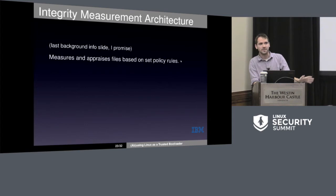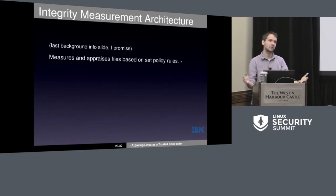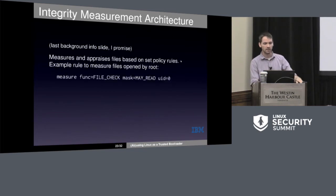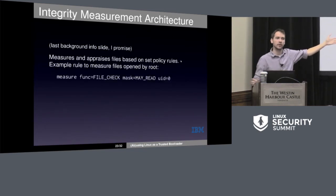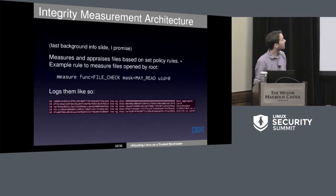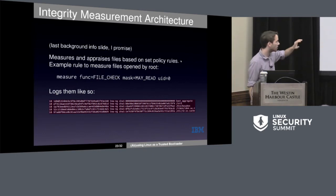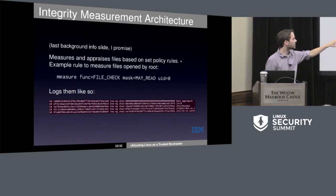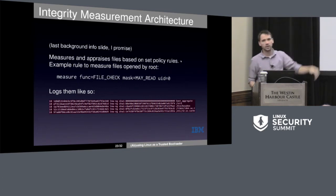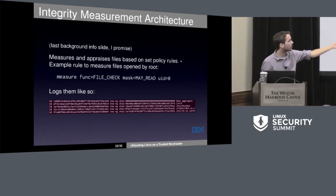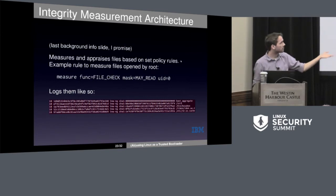Last background slide, I promise. Quick overview of IMA: it measures and appraises files based on a set policy. A really simple policy would be: measure all files read by root. The log looks like — sorry, it's a little small — but essentially we have what PCR is measured into, hash of the template, the template used, and so on. You can see which files were measured on the far right — for example, init, busybox, and so on.